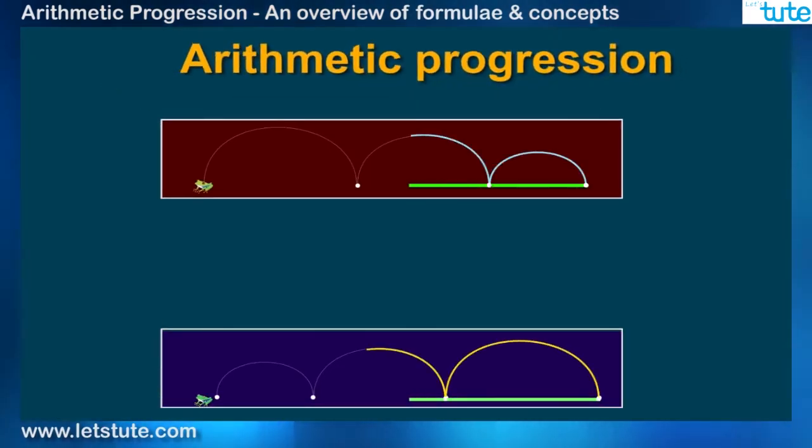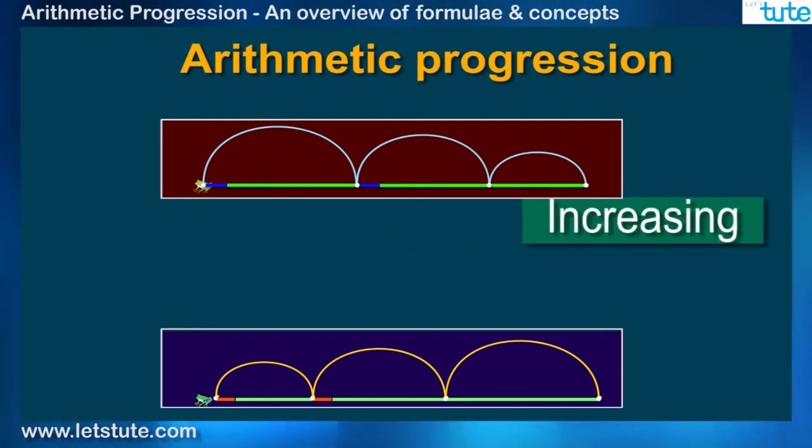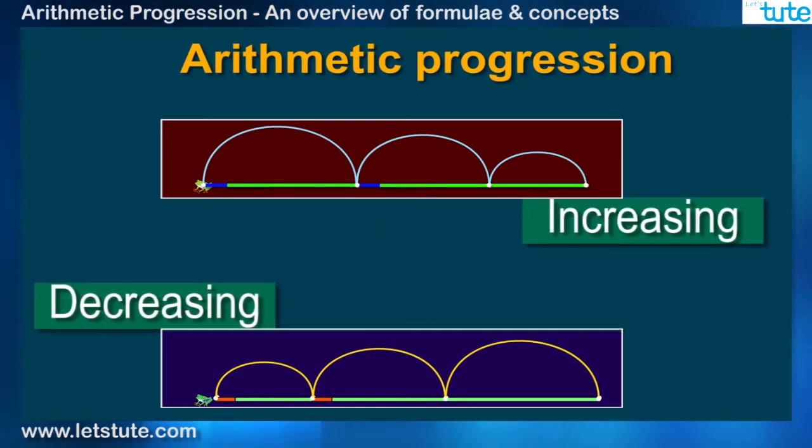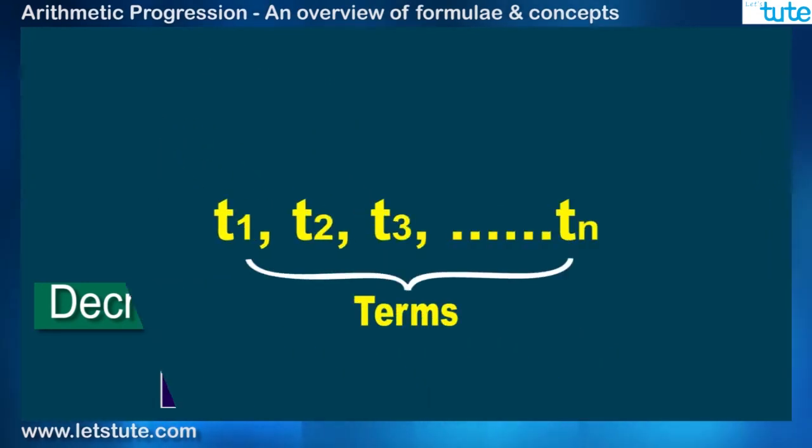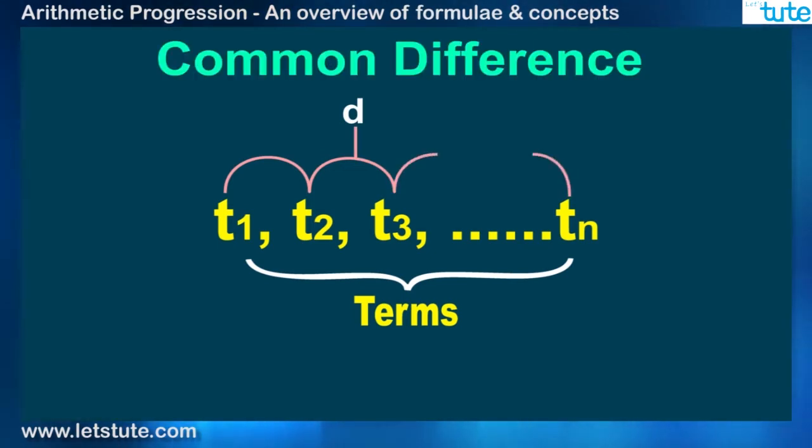AP is a sequence of numbers that follow a particular pattern and can be in increasing and decreasing order. Each number of the sequence is known as a term of the AP. The amount by which the next term is increased or decreased is called common difference.